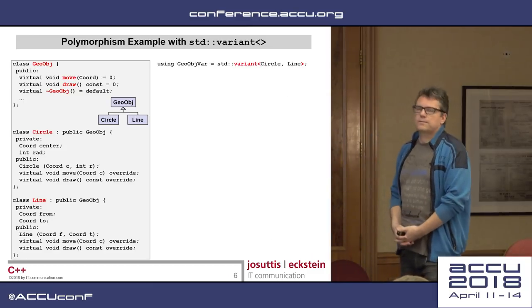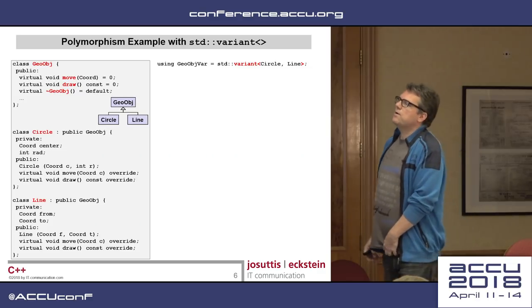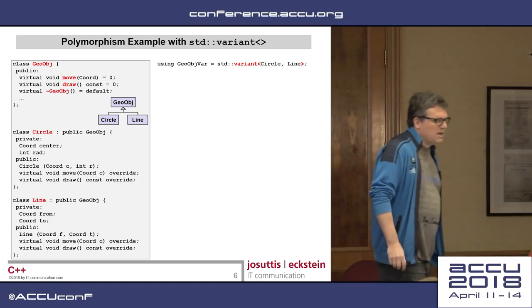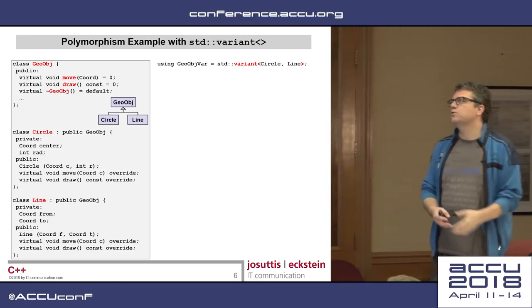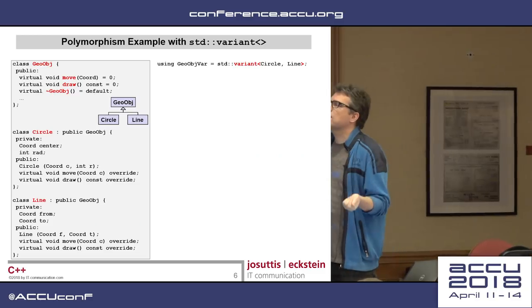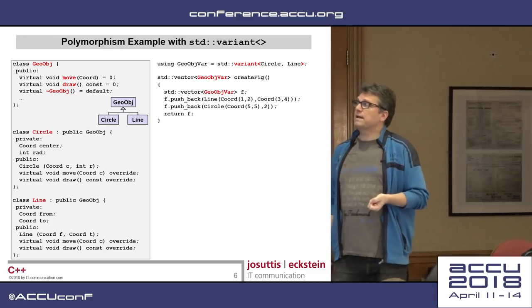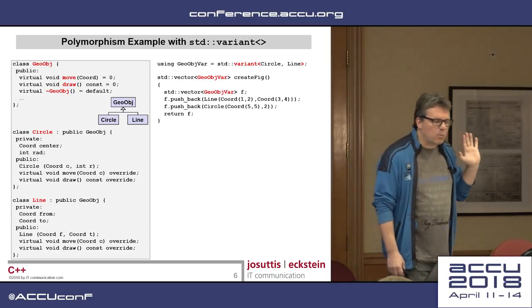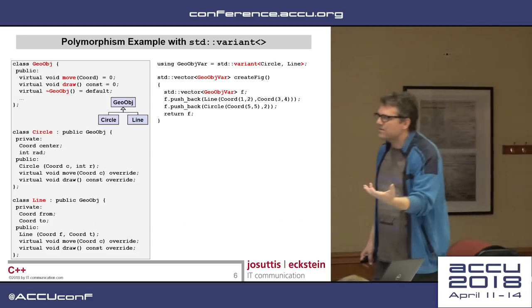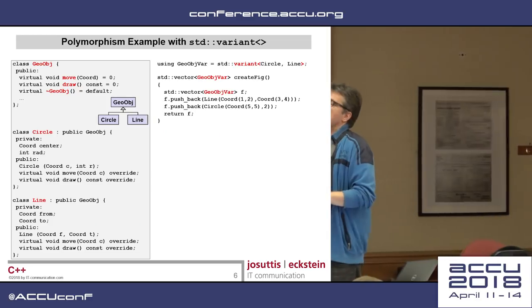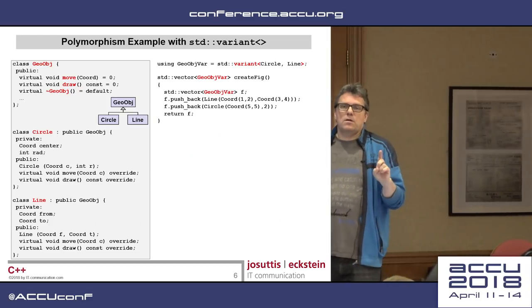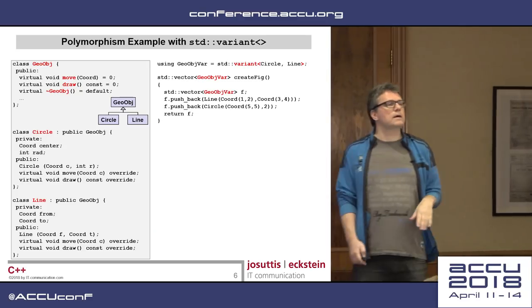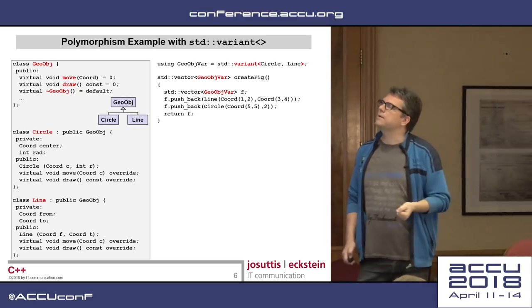So here is a new way to do that. We have variant now in the standard. Variant is an implementation of either or, of one of two types, of a finite set or closed set of different types. We can now say my vector contains elements which are either circle or line. No reference semantic anymore. We can use value semantics now. So no new is called here. Just push the elements in the vector.